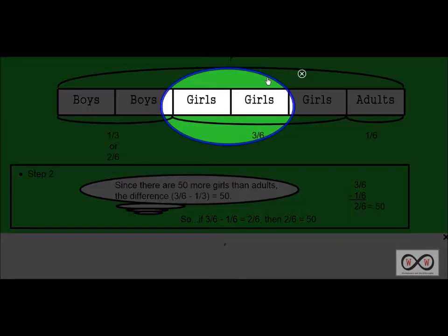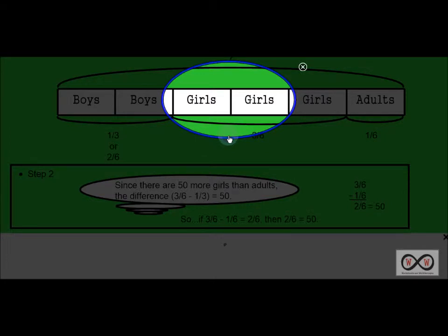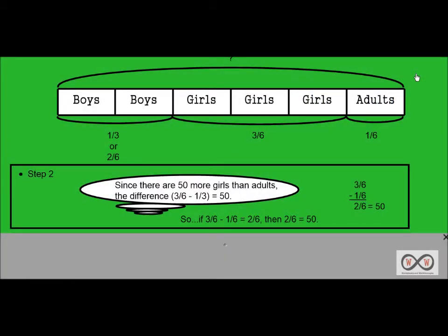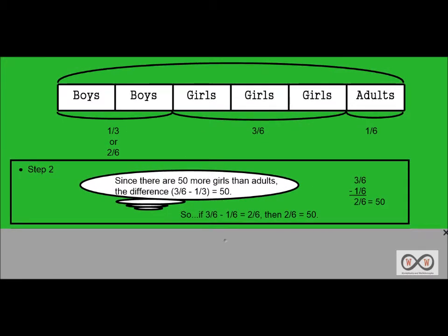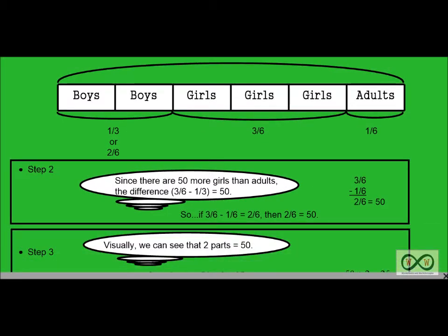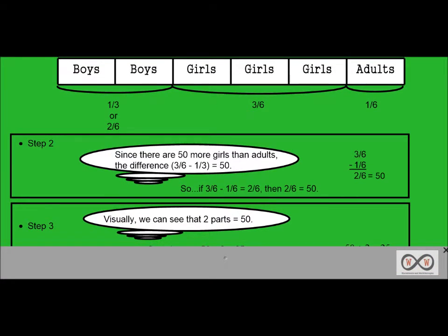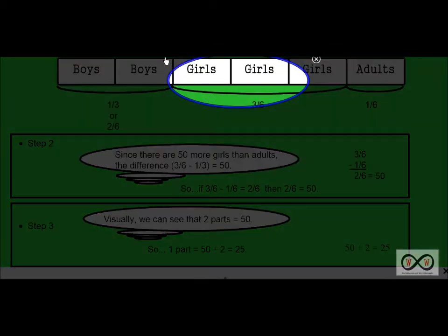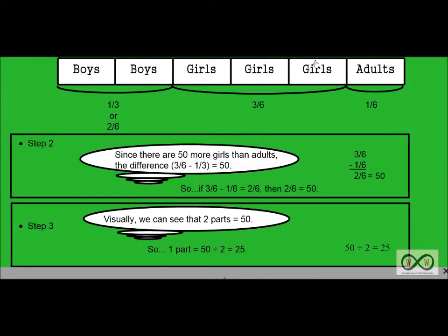Here we have the section representing two-sixths, and we know that two-sixths equals 50. You might be able to solve the problem at this point, realizing that we have three groups of two-sixths. However, there's an alternate way to solve it. Visually, we can see that two parts equals 50 — two-sixths equals 50, which is 50 people in the audience.